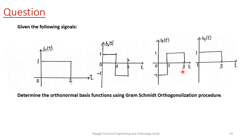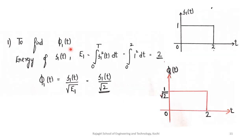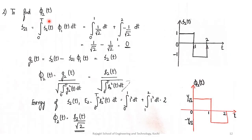Now let's see an example on how to apply the Gram-Schmidt orthogonalization procedure. We have four signals s1, s2, s3, s4 and our aim is to compute the set of orthonormal basis functions. In Step 1 we find φ1(t) = s1(t) / √E1. We compute E1 — the energy of s1(t) — which equals 2. Therefore φ1(t) = s1(t) / √2 = 1/√2. The energy of φ1(t) equals 1, confirming it is normalized to unit energy.